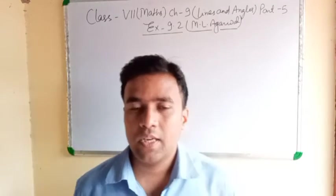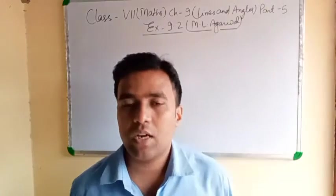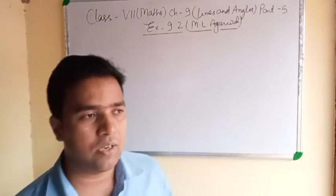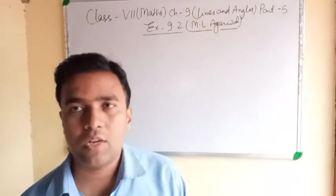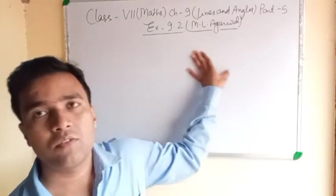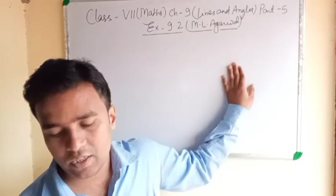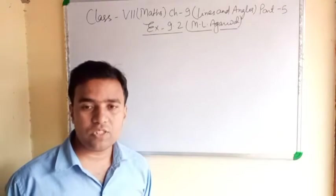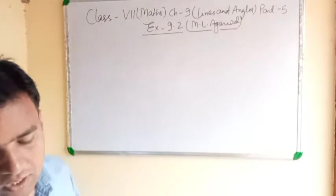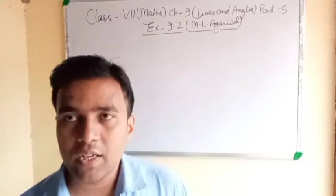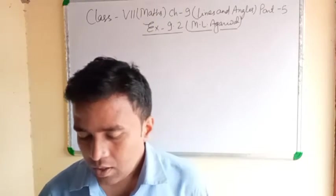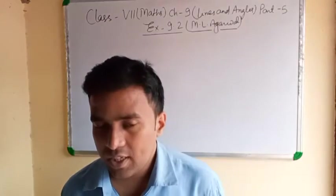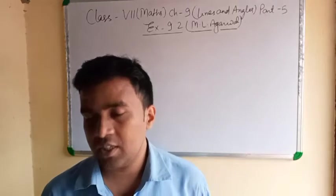Hello everyone. In the previous video I told you exercise 9.1 from M.L. Agrawal. In this video I will explain exercise 9.2 from M.L. Agrawal. It is the last exercise of this chapter. In this exercise, the first question asks you to identify each of the given pair of angles as alternate interior angle, co-interior angles, corresponding angles, or none of these in the given figure.